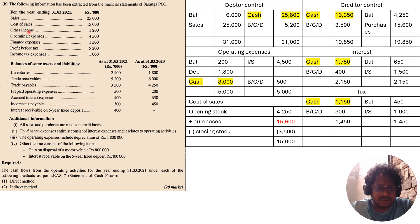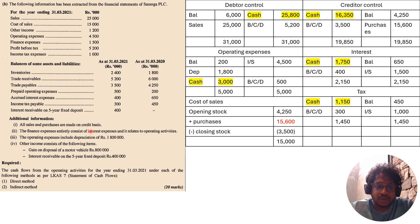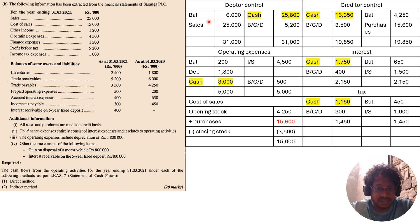For the direct method, sales, cost of sales, and additional information is given along with opening and closing balances. The first point is that all sales and purchases are made on a credit basis, which means there are no cash purchases or cash sales. So you have to find out cash receipts from debtors. The debtors control account opening balance is 6000 and closing balance is 5200, and you have to debit the total sales to the debtors control account.